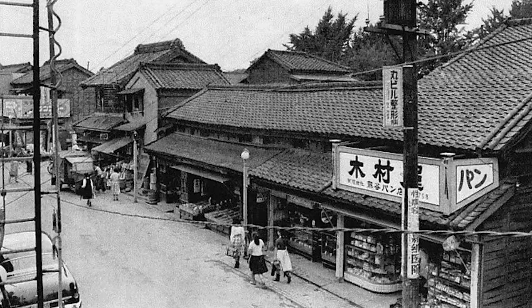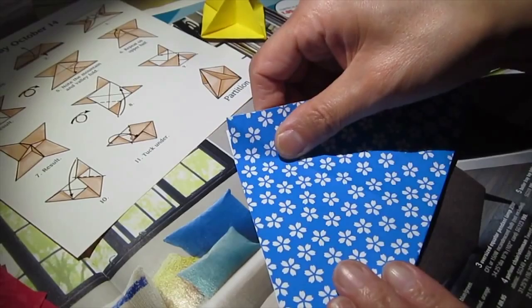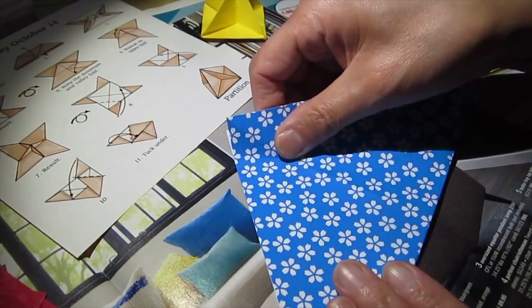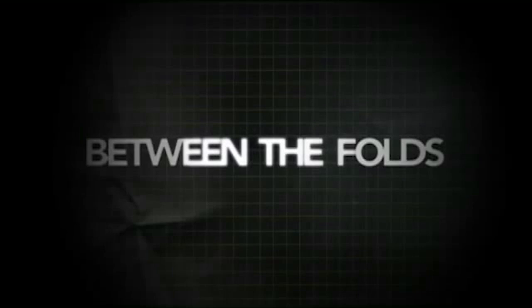Fast forward to the 1950s and 60s, and Akira Yoshizawa, a self-taught origami artist, revolutionizes paper folding by diagramming his folds. In the documentary Between the Folds, Yoshizawa says all origami starts with a flat surface.